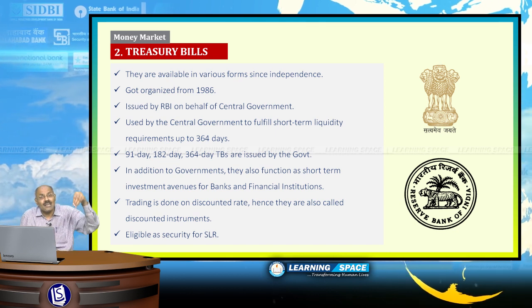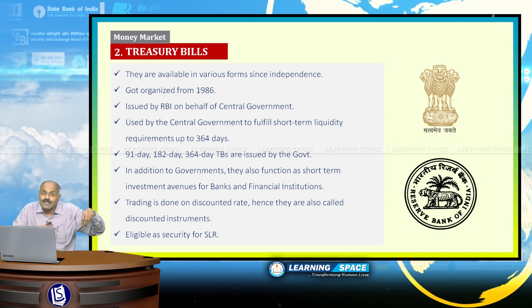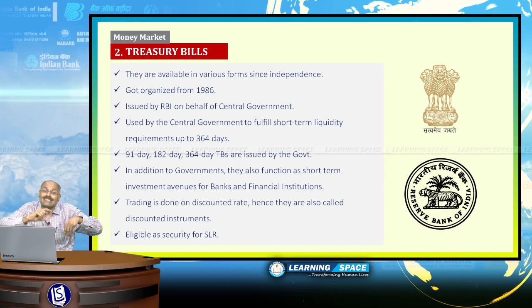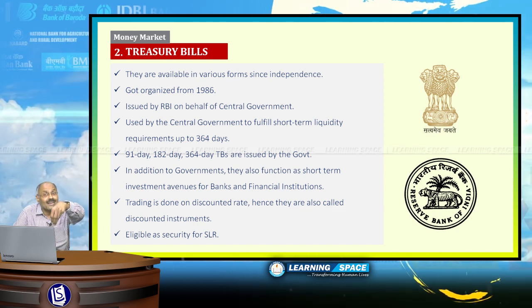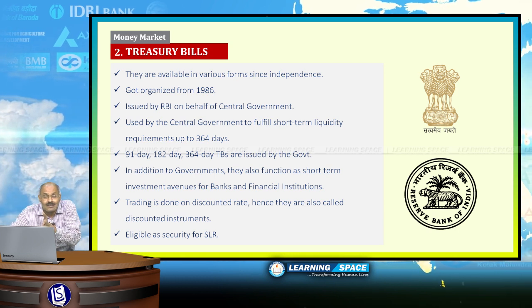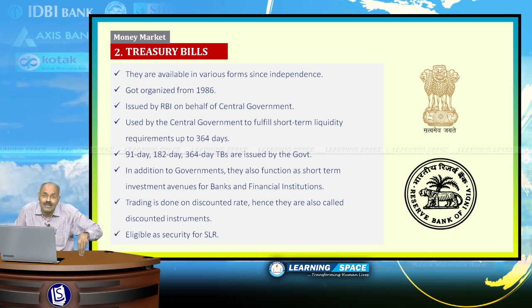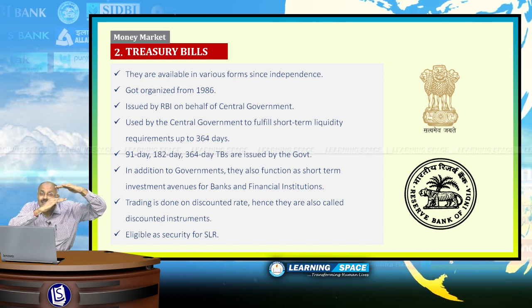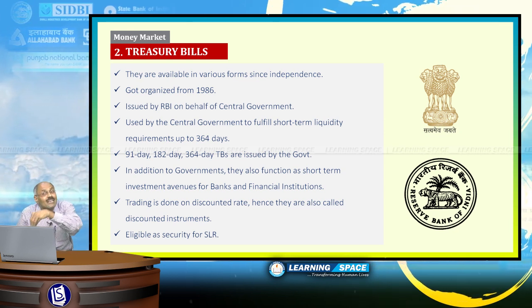Treasury bills are discounted instruments. The meaning of a discounted instrument is that the interest is discounted at the purchase time itself. If you are purchasing a 1 lakh rupee treasury bill, you pay around 97,000 or 98,000 — less than the face value. After the period, you will get 1 lakh rupees. Most money market instruments are discounted instruments.